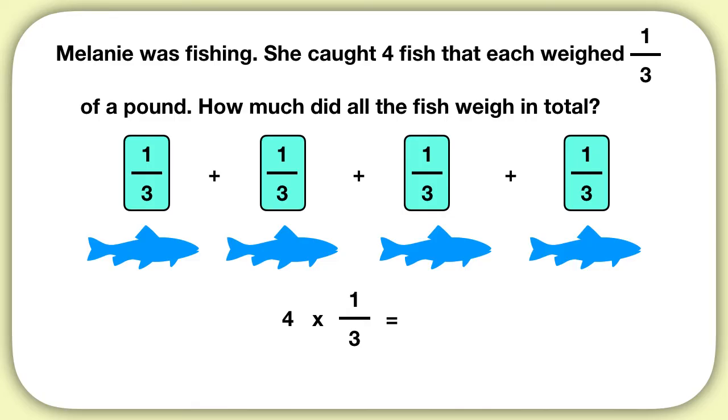What does 4 times 1 third equal? Well, 1 third plus 1 third is 2 thirds. 2 thirds plus 1 third is 3 thirds, plus another third is 4 thirds.